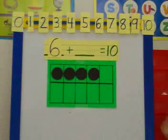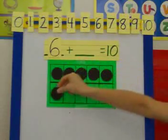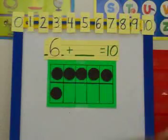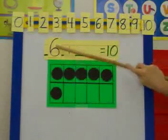1, 2, 3, 4, 5, 6. So I have 1, 2, 3, 4, 5, 6. There's my 6.